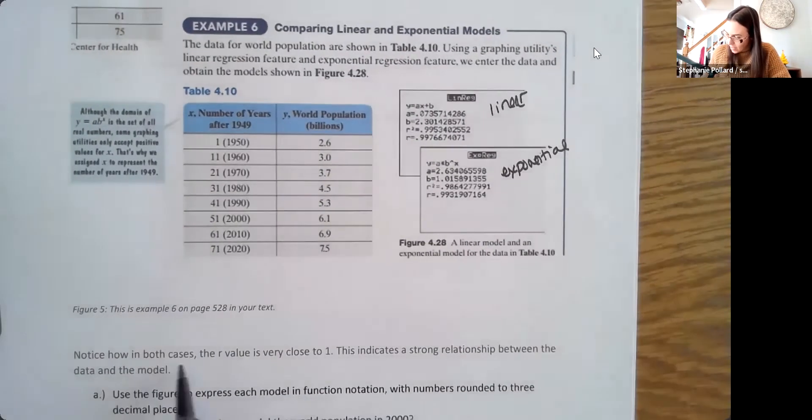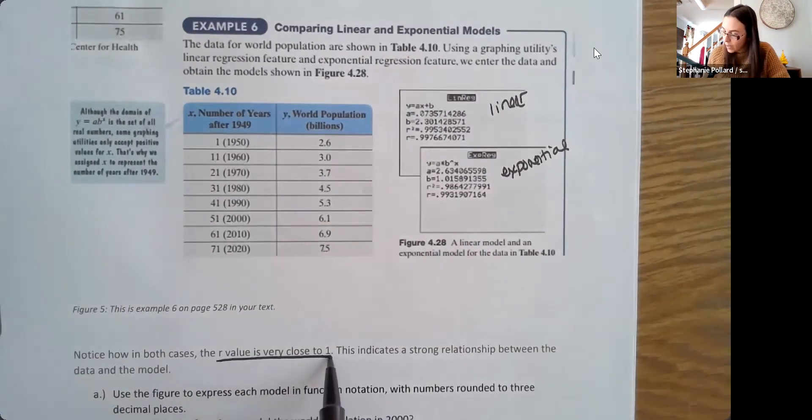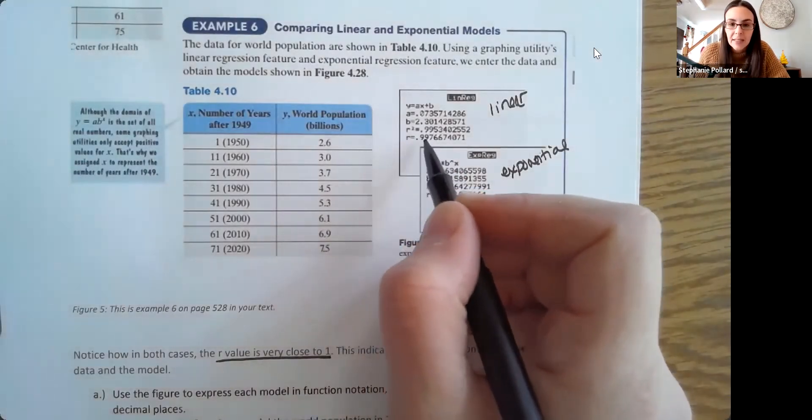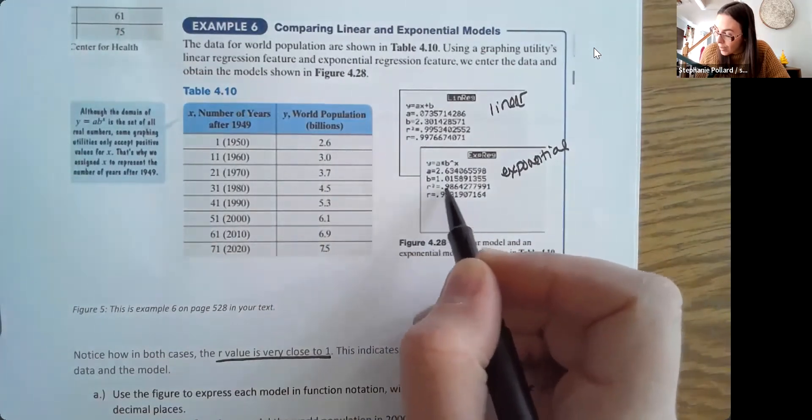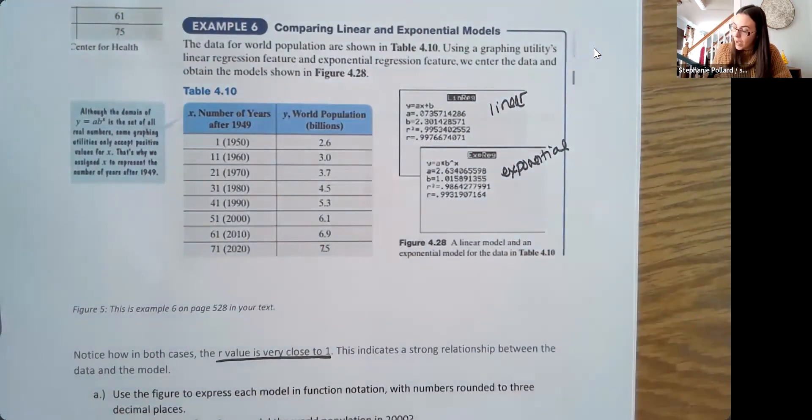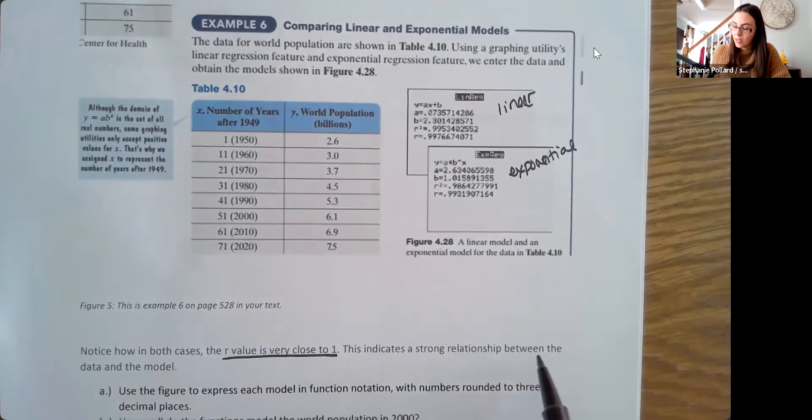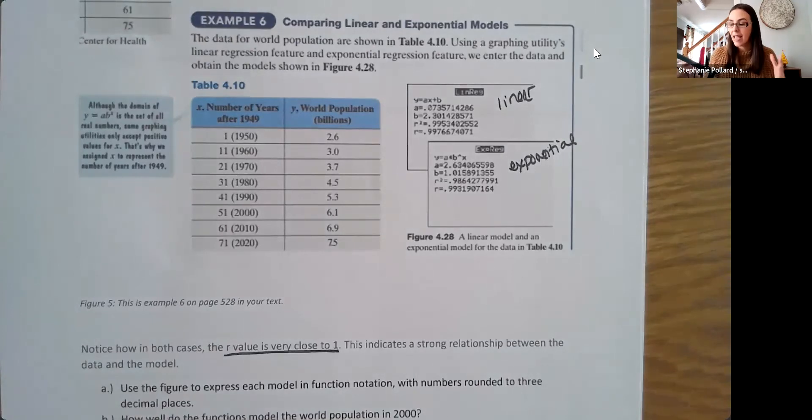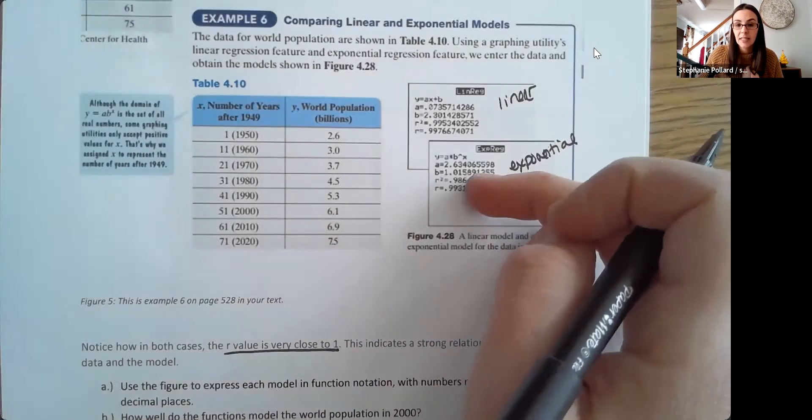So notice how in both cases, the R value is very close to one. So see here how that R value is almost one, is 0.9976. Here that R value is almost 1, 0.993. So actually this indicates a strong relationship between the data and either model. So I guess you could really use either model here to represent that data. It's only on it for 50 years. So if we expand our data set to more data, then I think that would change. But if we're just focusing on these 50 years, then actually both of these seem to be very good models to represent the data.